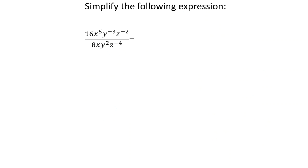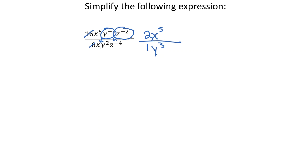Our third type of problem asks us to simplify an algebraic expression with many bases, exponents, and negative exponents. We start by reducing 16 and 8 — since they are not the same base, we divide by their common factor. Both are divisible by 8, giving us 2 over 1. Next, we move our negative exponents: x to the fifth is positive, so it stays. y to the negative third moves down to become y to the positive third. z to the negative 2 also moves down to become z to the positive 2.